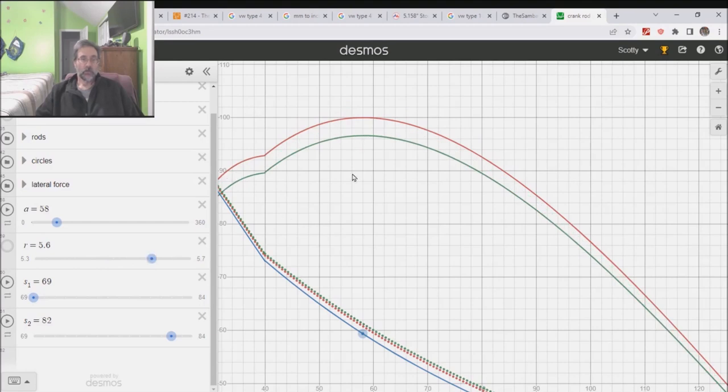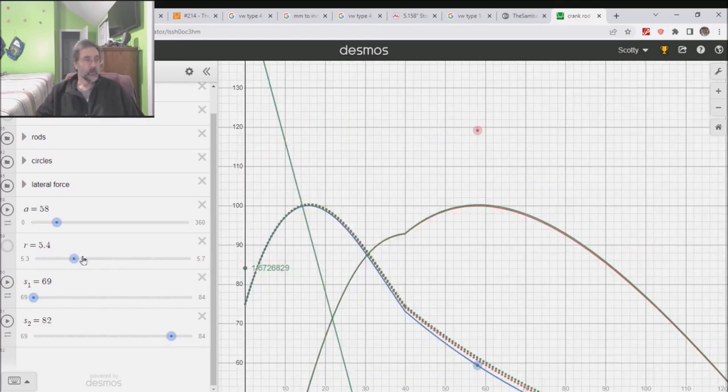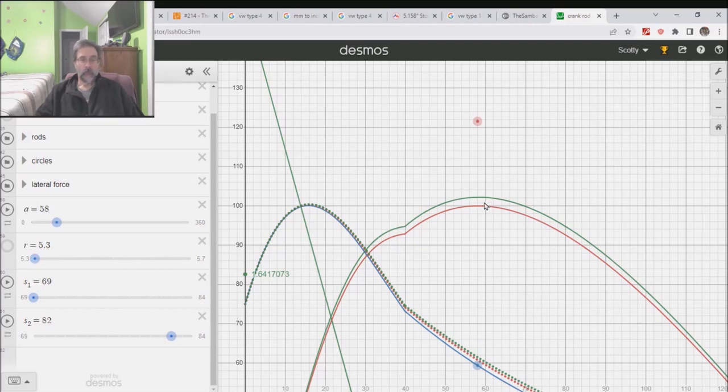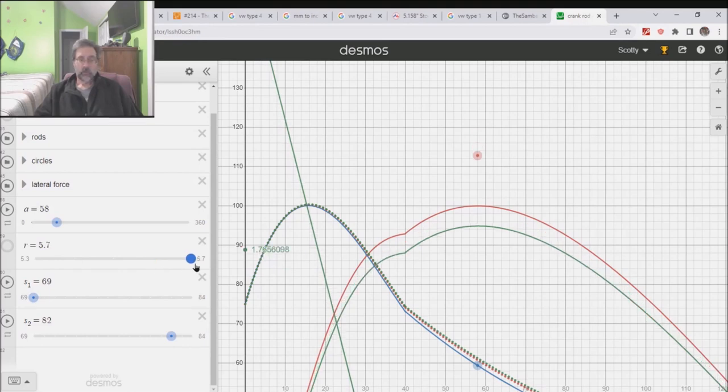Let's go ahead and play with the rod angle. So I can bring the rod angle of the stroker down. It should get worse. It did, it got worse. This is stock, and I should be able to make it get better. So look at that. Don't just look at this curve right here. Look at the green curve down in here as well.